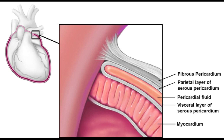The serous pericardium further contains two layers. The layer that covers the pericardium from inside is called the parietal serosa, and the layer that covers the heart is called the visceral serosa or epicardium.